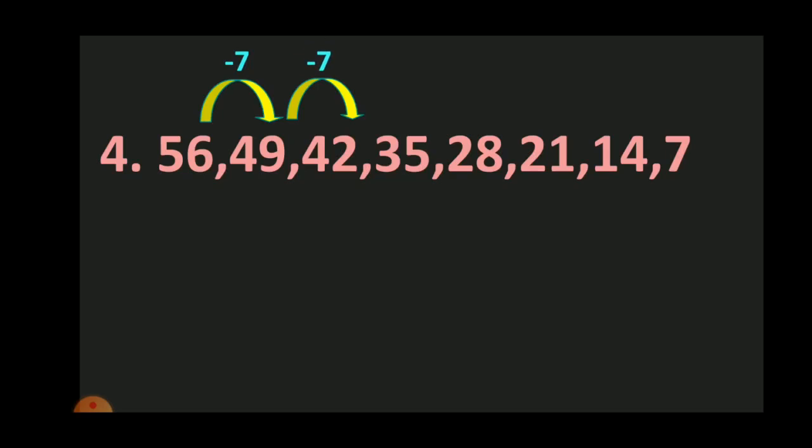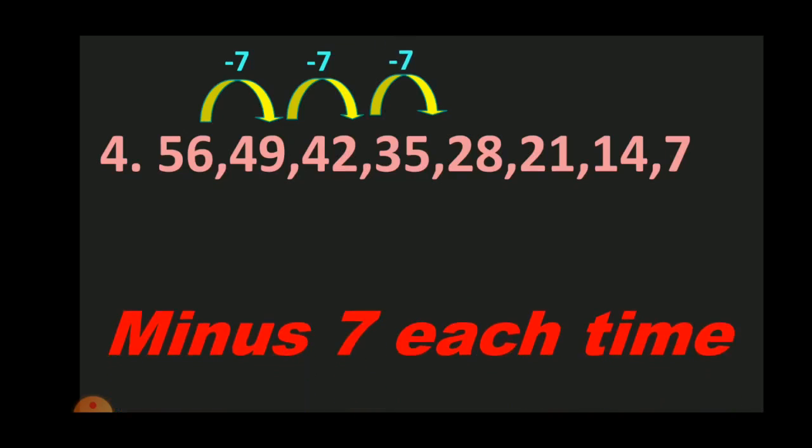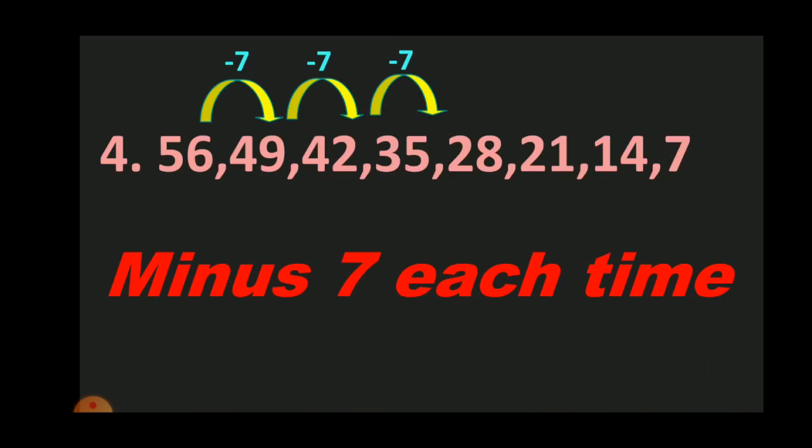In the next one, 42 to 35. Again, it is a difference of 7. Likewise, in others also, it is a difference of 7. Our rule will be minus 7 each time.